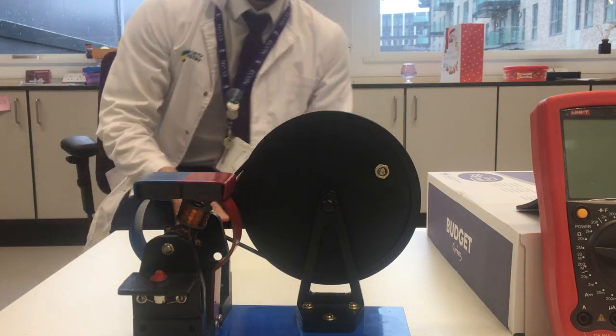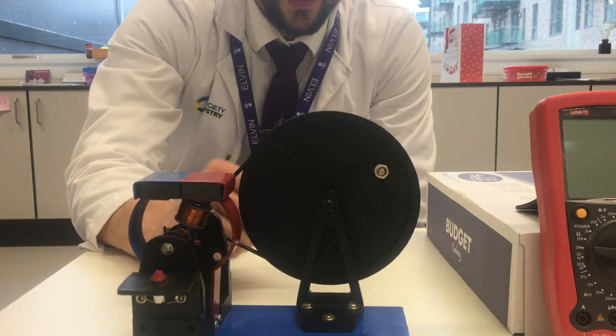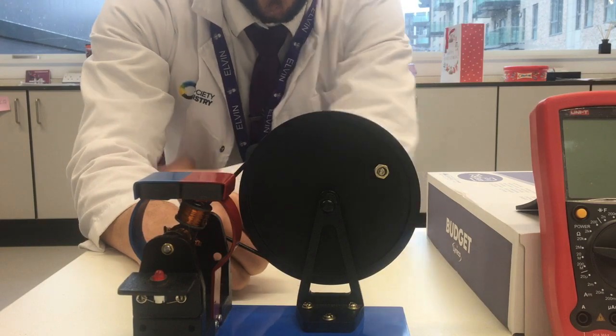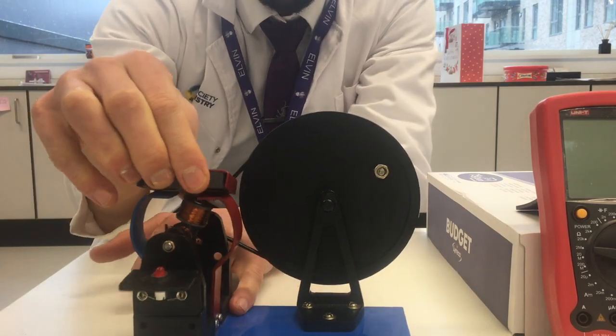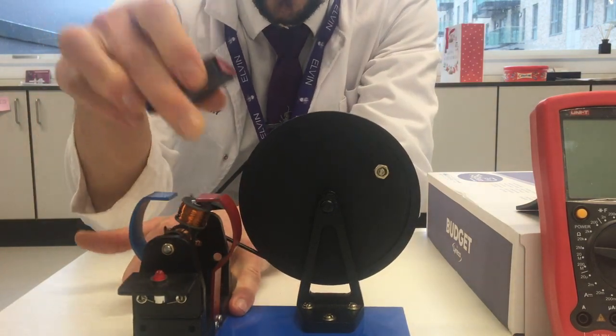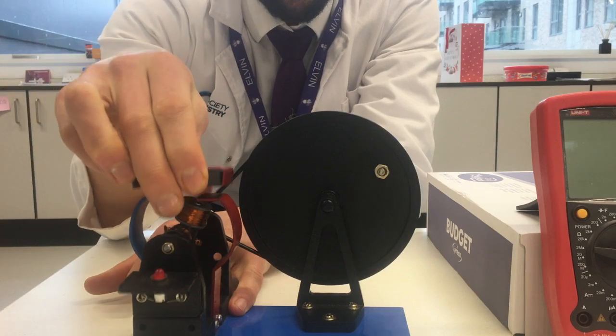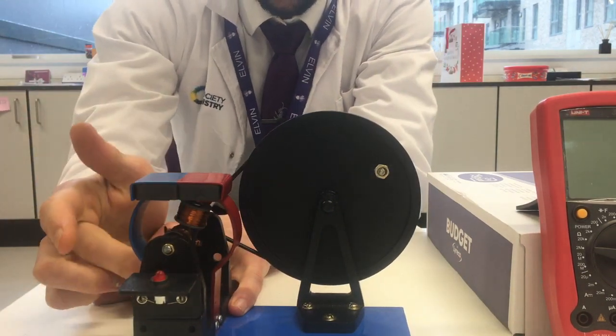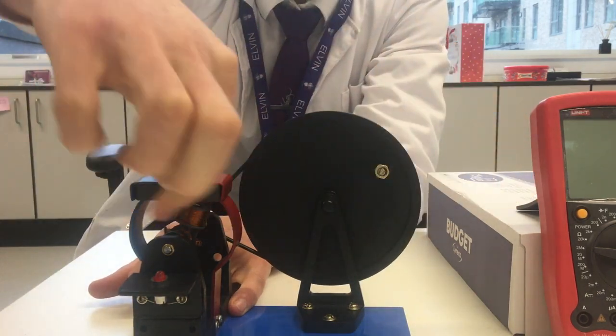Hi Year 11, today I'm going to move a conductor in a magnetic field to produce an electric current. What I've got here is firstly a magnet that attaches to these pieces of soft iron. This side becomes a North Pole, this side is a South Pole. I've got magnetic field lines running straight across.